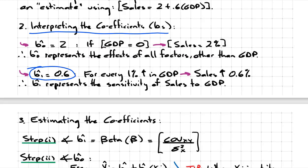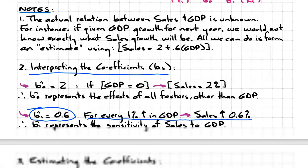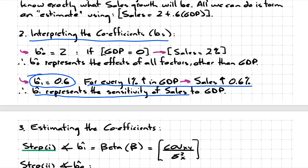How about B1, which is 0.6? This indicates that for every 1% increase in GDP, sales will increase by 0.6%. This is just elementary algebra: if GDP goes up by 1%, then 1% times 0.6 means sales would go up by 0.6%. So B1 represents the sensitivity of sales to GDP.